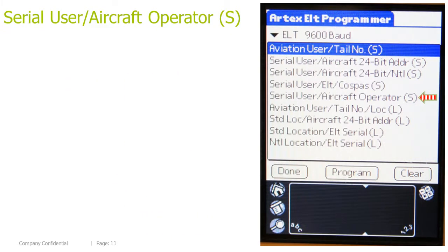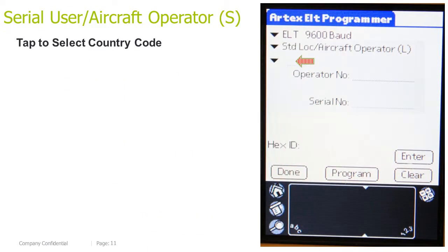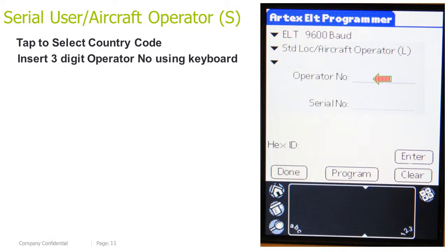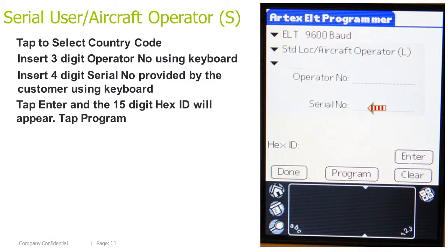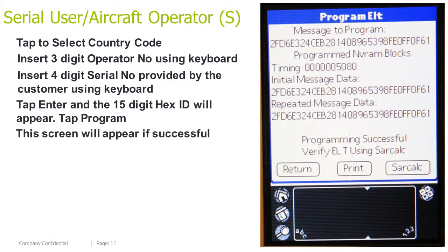Serial user aircraft operator short. Tap to select the country code. Insert the 3-digit operator number using the keyboard. Insert the 4-digit serial number provided by the customer using the keyboard. Tap Enter and the 15-digit HEX ID will appear. Tap Program. This screen will appear if successful.